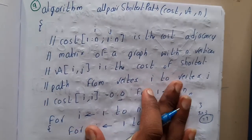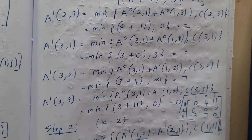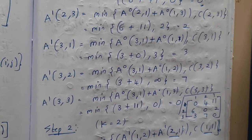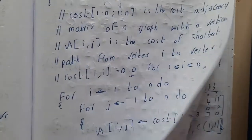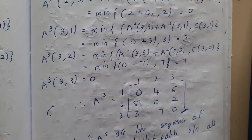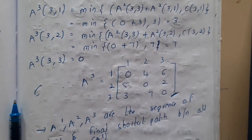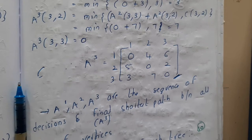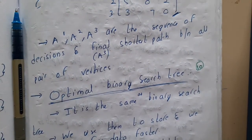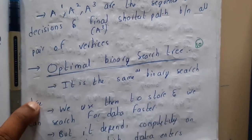I hope everyone got a clear idea on all pair shortest path. Please go through the example because this is an important problem, though it is not frequently asked in examinations since there are multiple more important problems in this chapter. Be clear with the method so that if it comes you can solve it. At the end, the result will be a matrix with all combinations and their weights, so you can identify which path has the minimum cost. In the next lecture we'll be going through optimal binary search tree — thank you for watching.